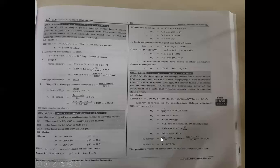Percentage error = (true energy − recorded energy) / true energy × 100 = (50.6 − 50) / 50.6 × 100 = 1.185%. The positive value of error indicates that the meter runs slowly.